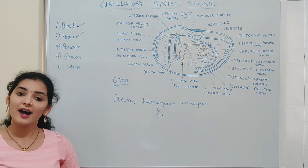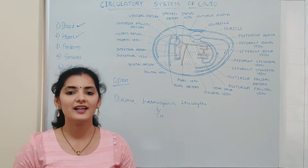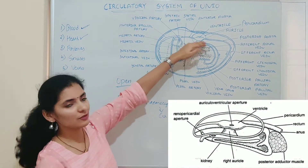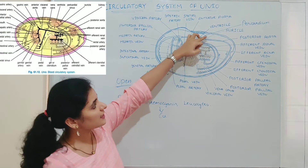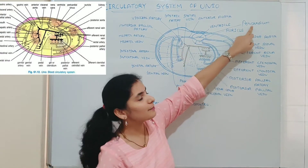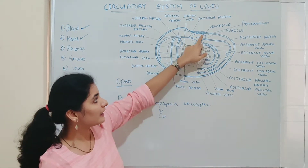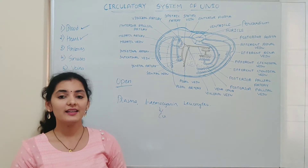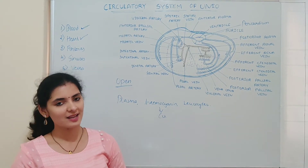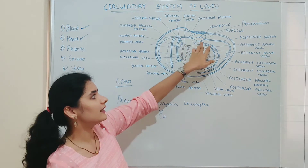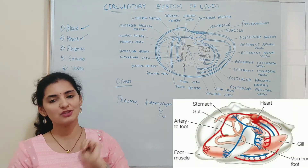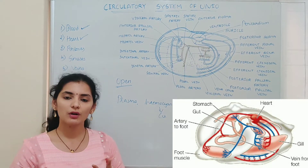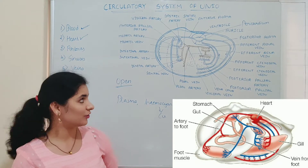The next component is the heart. The heart in the case of Unio is a highly muscular organ, present on the dorsal surface of the body just above the visceral mass. The heart is enclosed in a structure called the pericardium, which encloses a cavity known as the pericardial cavity, containing pericardial fluid. The heart of Unio is three-chambered: two auricles and one ventricle.